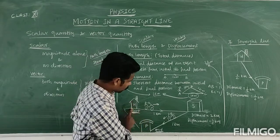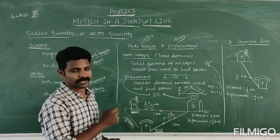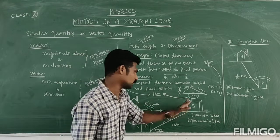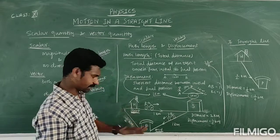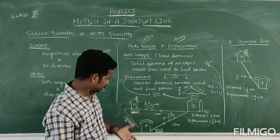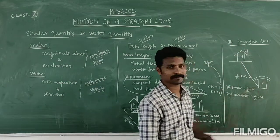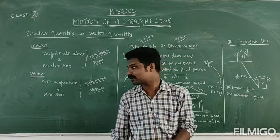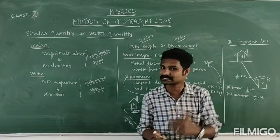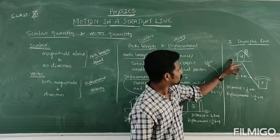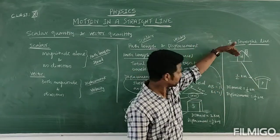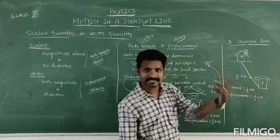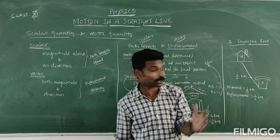Now observe that home, school, and park are three points. If home to park is in a straight lane, then distance is equal to displacement. Home to park is half a km. If you go straight to the park and don't return, the distance is half a km and the displacement is also half a km, because it is a straight lane and you didn't return back.